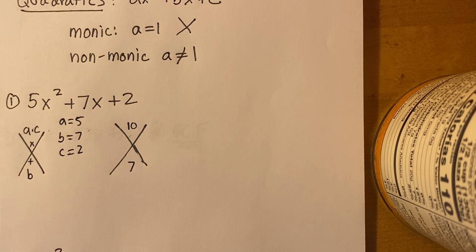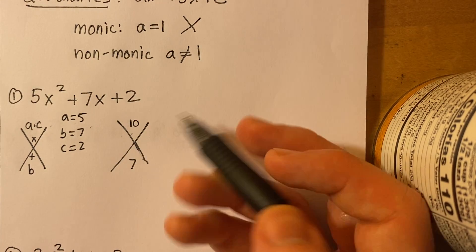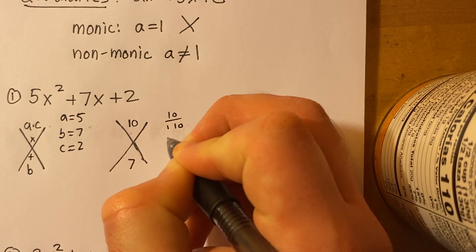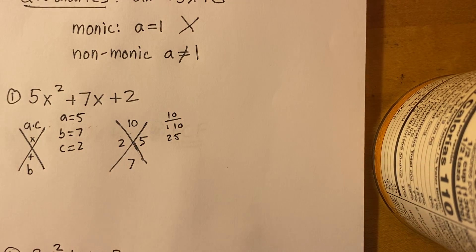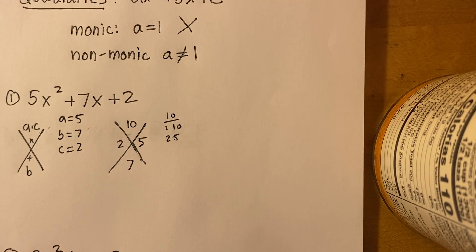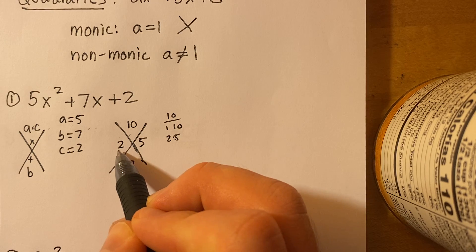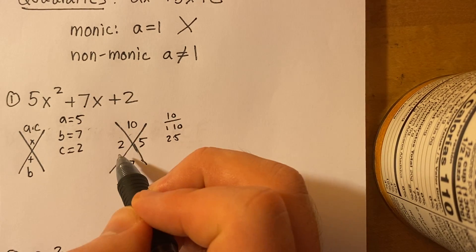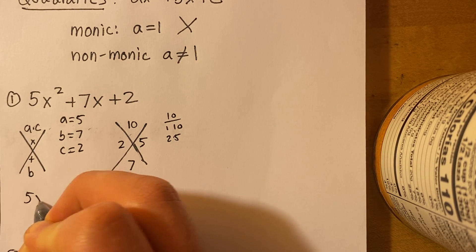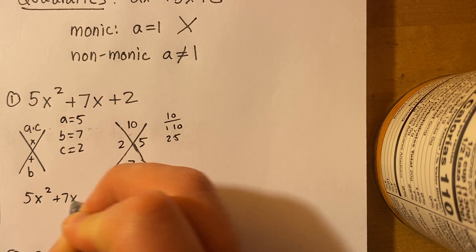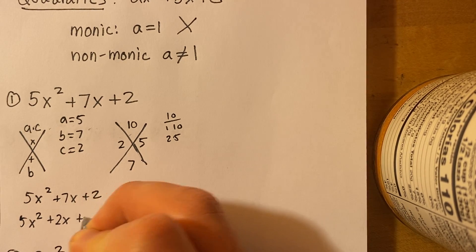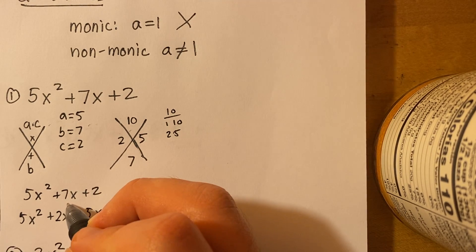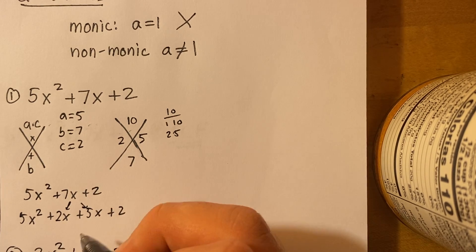And then we can use the same method that we used previously. So for 10, I know that the factors of 10 are 1 and 10 and 2 and 5. So 2 plus 5 equals 7. There you go. So in this one, what we're going to do is we're going to create a box. For this 2 and 5, we're going to rewrite that middle term as 2x and 5x.